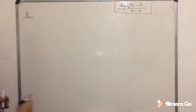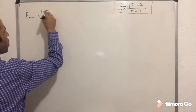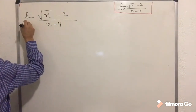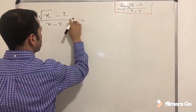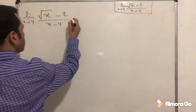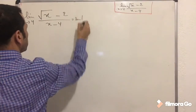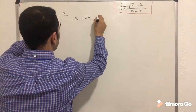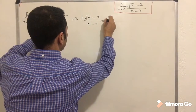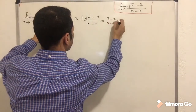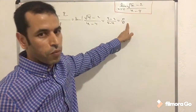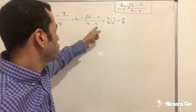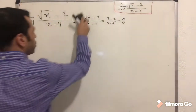The limit of (square root of x minus 2) over (x minus 4), when x is approaching to 4. If you apply the limit directly and plug in 4: square root of 4 is 2, so you get 2 minus 2 over 4 minus 4, which is 0 over 0. This is an indeterminate form — we cannot solve it like this.